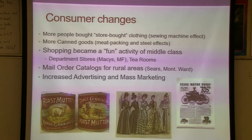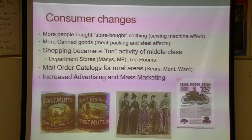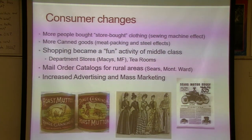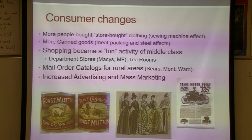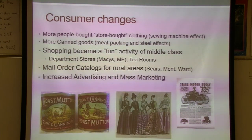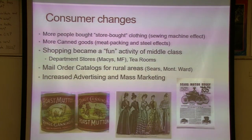Consumer changes at this time included more store-bought clothing due to Singer sewing machines, factories, and cheaper transportation via railroads. Canned goods increased with the meatpacking industry, and shopping became a fun activity with department stores and tea rooms. Rural people could order from the Sears or Montgomery Ward catalogs. Mass marketing and advertising emerged — that's why we saw the Coca-Cola example with many name brand products.